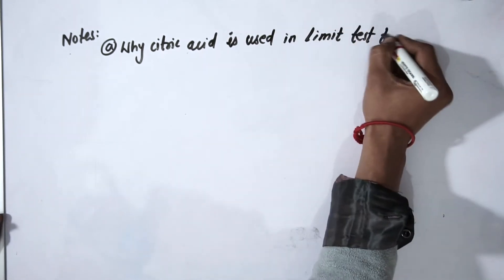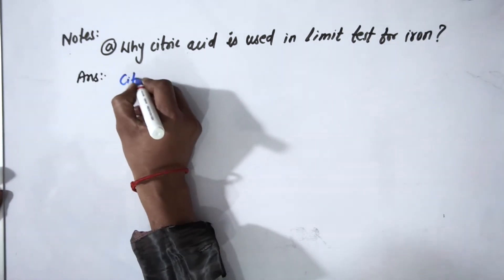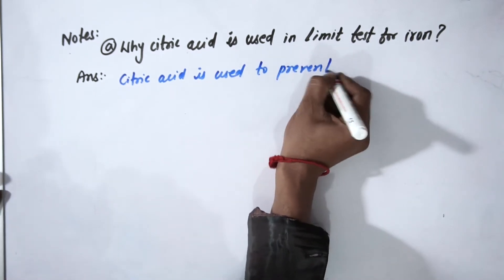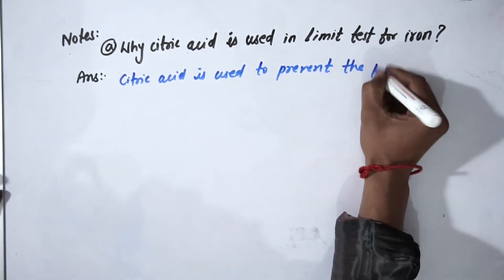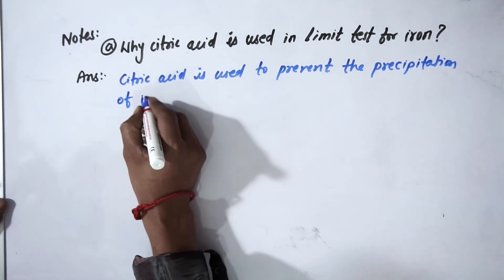The answer is that citric acid is used to prevent the precipitation of iron as its hydroxide when ammonia is added.